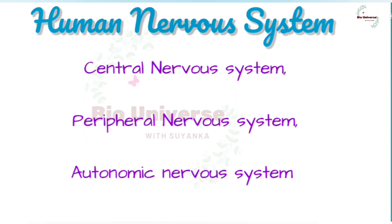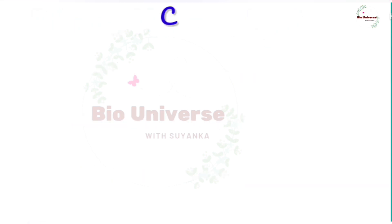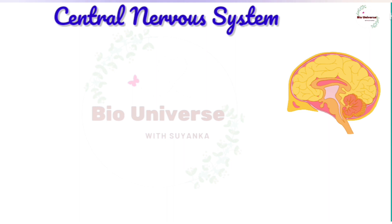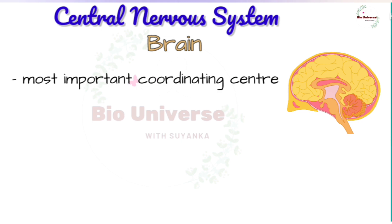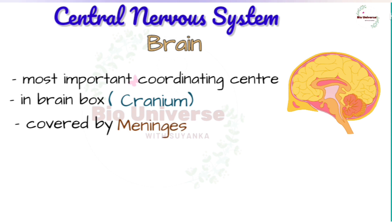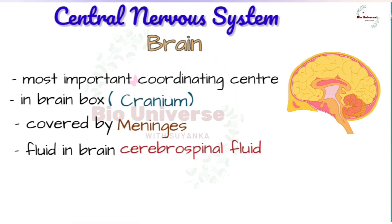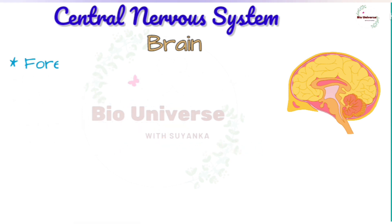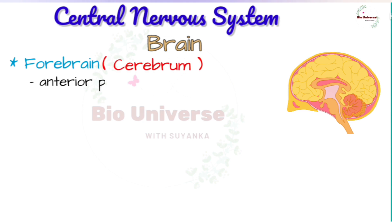In humans and vertebrates, the nervous system may be divided into the central nervous system, peripheral nervous system, and autonomic nervous system. The central nervous system consists of the brain and the spinal cord. The brain is the most important coordinating center in the body. It is lodged in the brain box or cranium which protects it. The brain is covered by membranes called meninges, and between the membranes and the brain, and also inside the brain, there is a fluid called cerebrospinal fluid which also protects the brain.